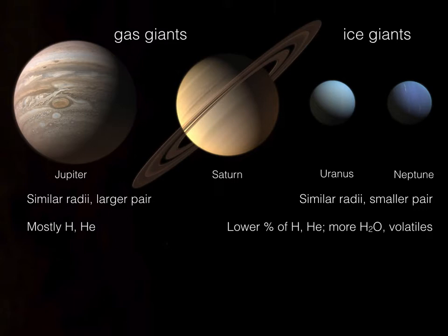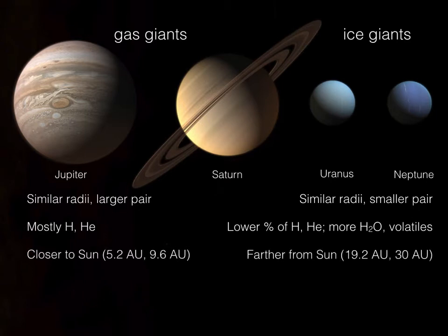Things like ammonia and methane condense and form ices, which is why they're called ice giants — they really do have icy chunks floating around in the atmosphere. Jupiter and Saturn are much closer to the sun at 5.2 and 9.6 astronomical units respectively, whereas Uranus and Neptune are much farther, especially Neptune, which is all the way out at 30 AU. The fact that they're farther from the sun and have a different chemical composition is no coincidence.